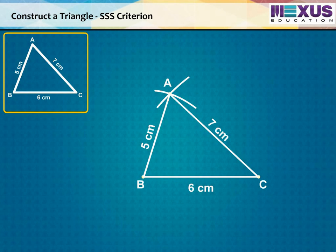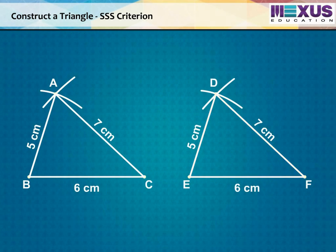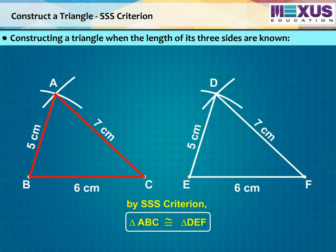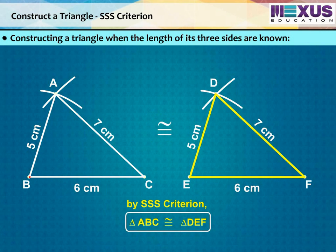Now, if we construct a triangle DEF with the same parameters as triangle ABC, then by SSS criterion, we can say that triangle ABC is congruent to triangle DEF.